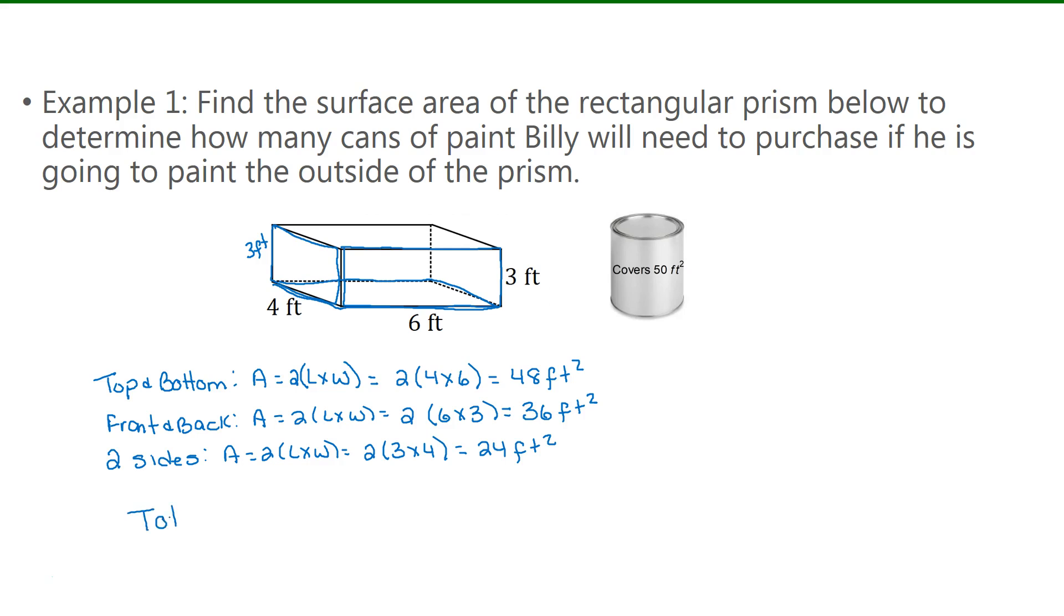Now the total surface area is found by adding the three values together, 48, 36, and 24. And I get a total of 108 feet squared.